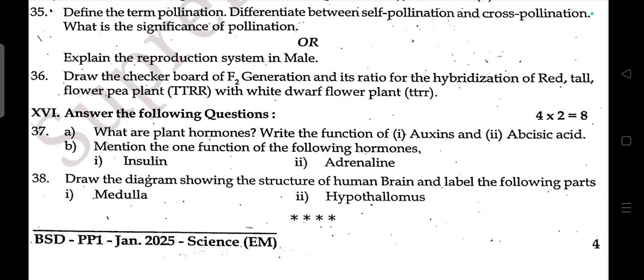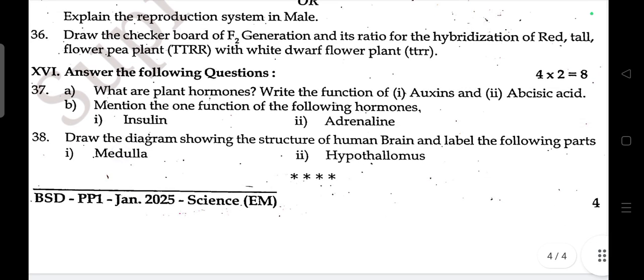Draw the Punnett square of F2 generation and its ratio for the hybridization of a red tall flower plant with a white dwarf flower plant. What are plant hormones? Write the functions of auxins and abscisic acid.